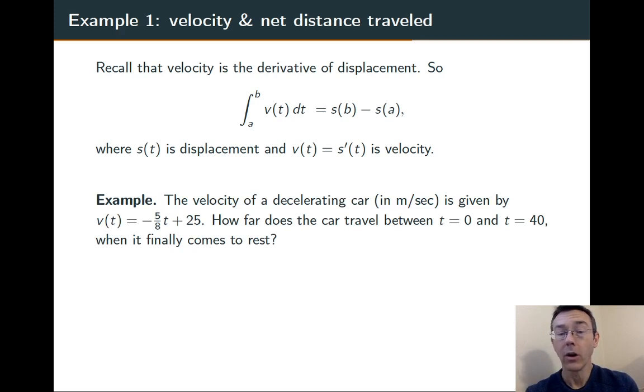The velocity of a decelerating car is given by negative 5 eighths t plus 25 meters per second. How far does the car travel between t equals 0 and t equals 40 when it finally is at a stop?